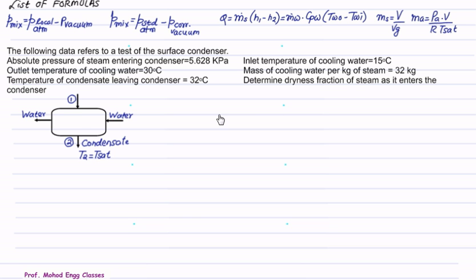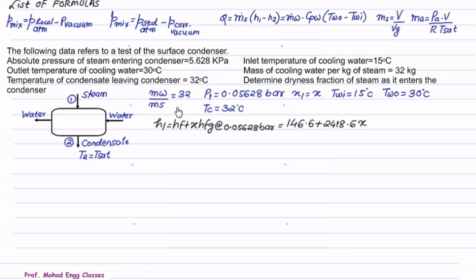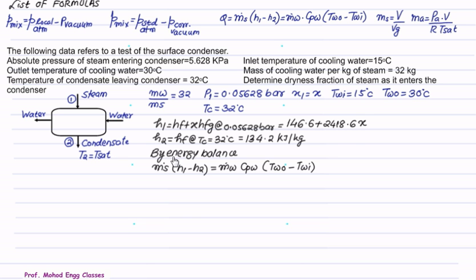We want to find the dryness fraction of steam as it enters the condenser. The ratio of mass of water to mass of steam is 32. P1 is 0.05628 bar and X1 is unknown, so let it be X. Inlet water temperature is 15°C and outlet is 30°C. We calculate H1 as wet steam: HF + X·HFG at 0.05628 bar, which from the steam table is approximately 146.6 + 2418.6·X. H2 at condensate temperature of 32°C gives HF = 134.2 kJ/kg from the steam table.